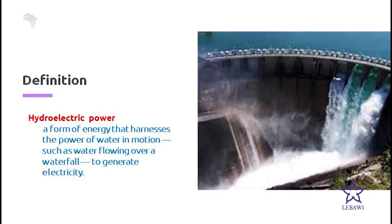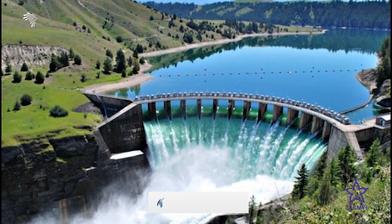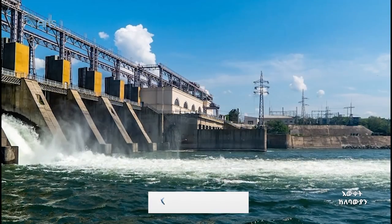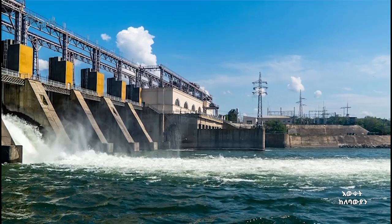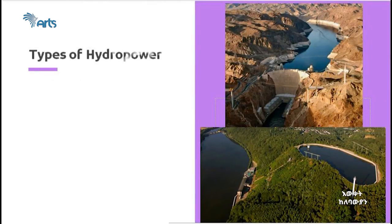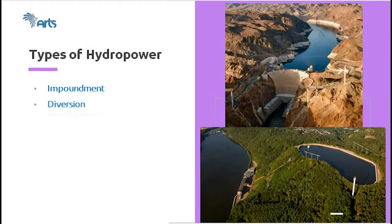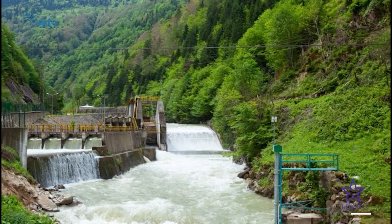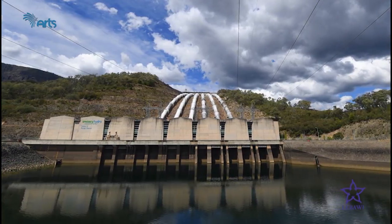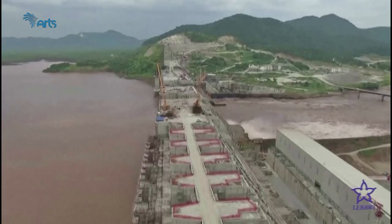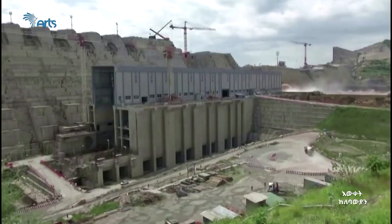Hydroelectric power is the production of electricity by harnessing the gravitational potential energy of falling water without using up the water. There are three types of hydroelectric power facilities: impoundment, diversion, and pumped storage. The most common type is an impoundment facility. The Grand Ethiopian Renaissance Dam can be considered a typical example of an impoundment facility.